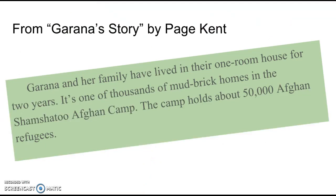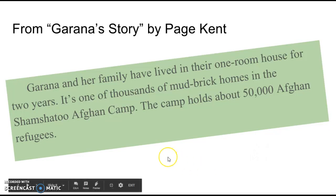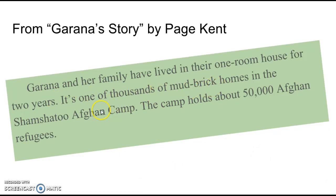For example — we have a couple more we'll do together, and this will be the last thing I'll show you. From Garana's Story by Paige Kent, it says: 'Garana and her family have lived in their one-room house for two years. It's one of thousands of mud-brick homes in the Shamshatu Afghan camp. The camp holds about 50,000 Afghan refugees.' So we have a one-room house, thousands of mud-brick homes, and a camp that holds 50,000 refugees.